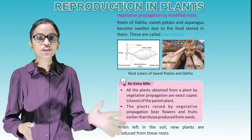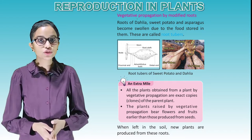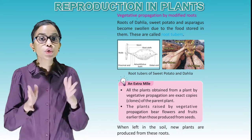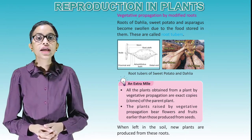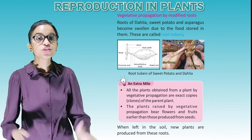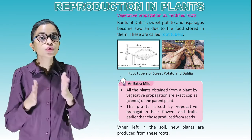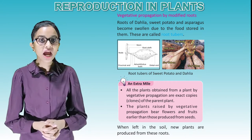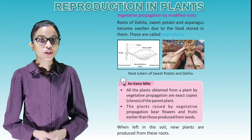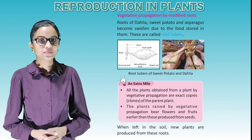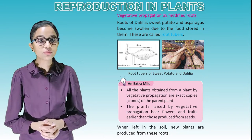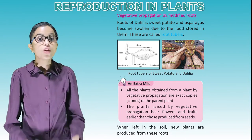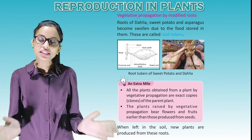Vegetative propagation by modified roots: Roots of dahlia, sweet potato and asparagus become swollen due to the food stored in them. These are called root tubers. This picture is showing root tubers of sweet potato and dahlia. All the plants obtained from a plant by vegetative propagation are exact copies — clones — of the parent plant. The plants raised by vegetative propagation bear flowers and fruits earlier than those produced from seeds. When left in the soil, new plants are produced from these roots.